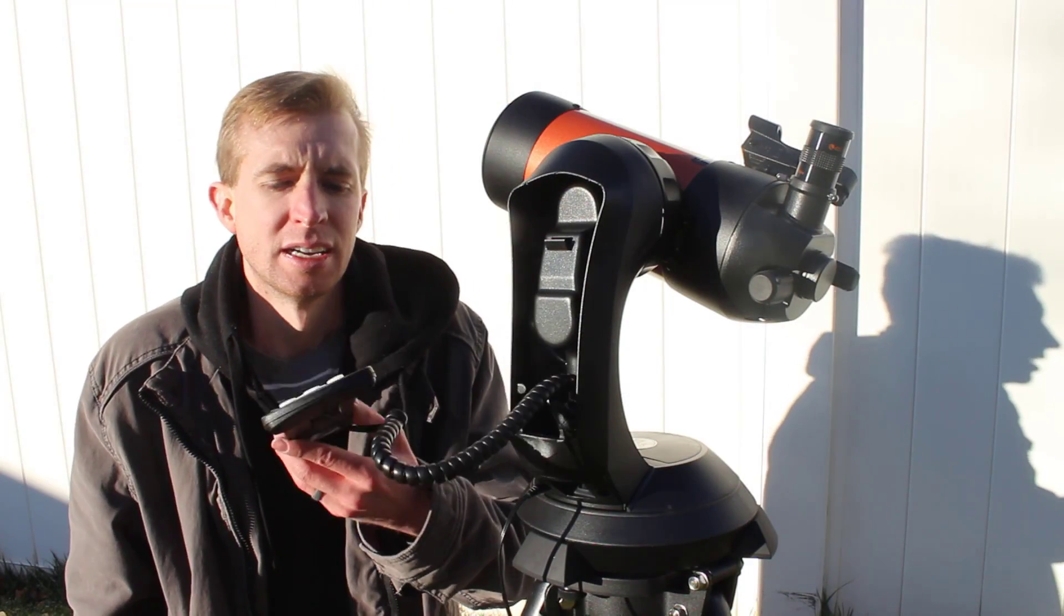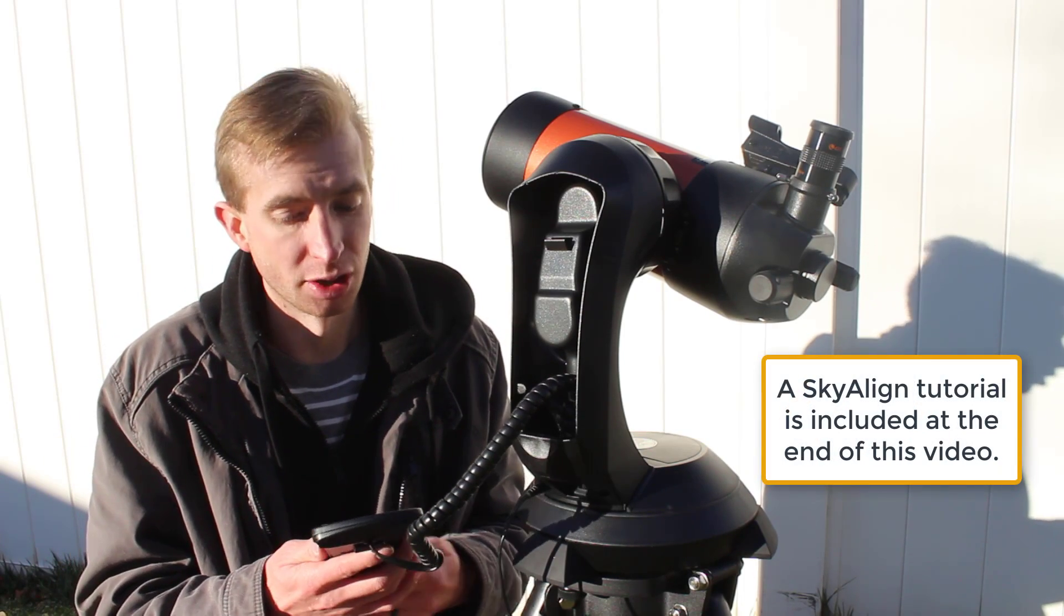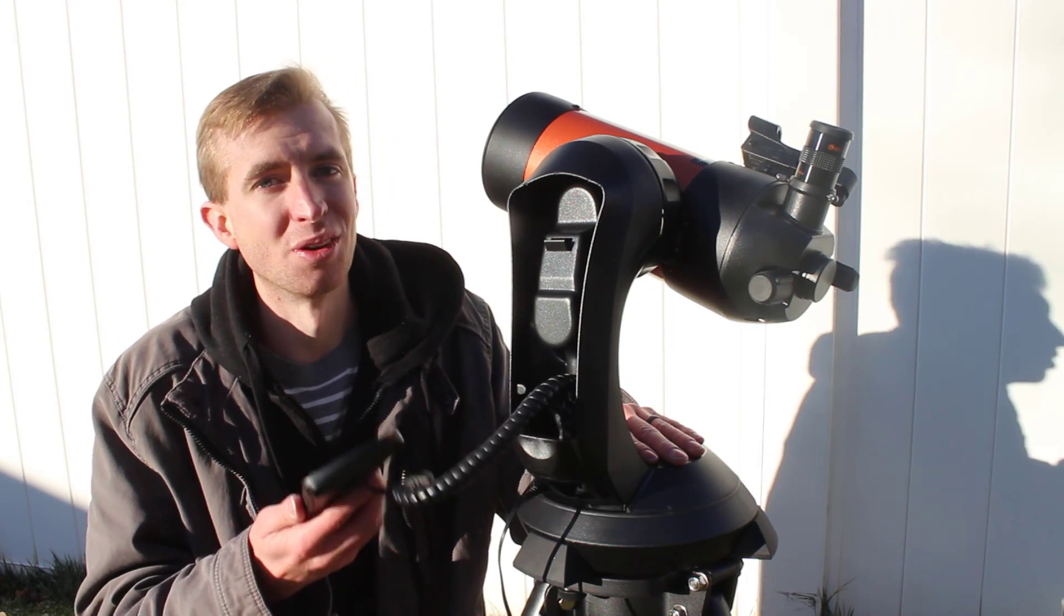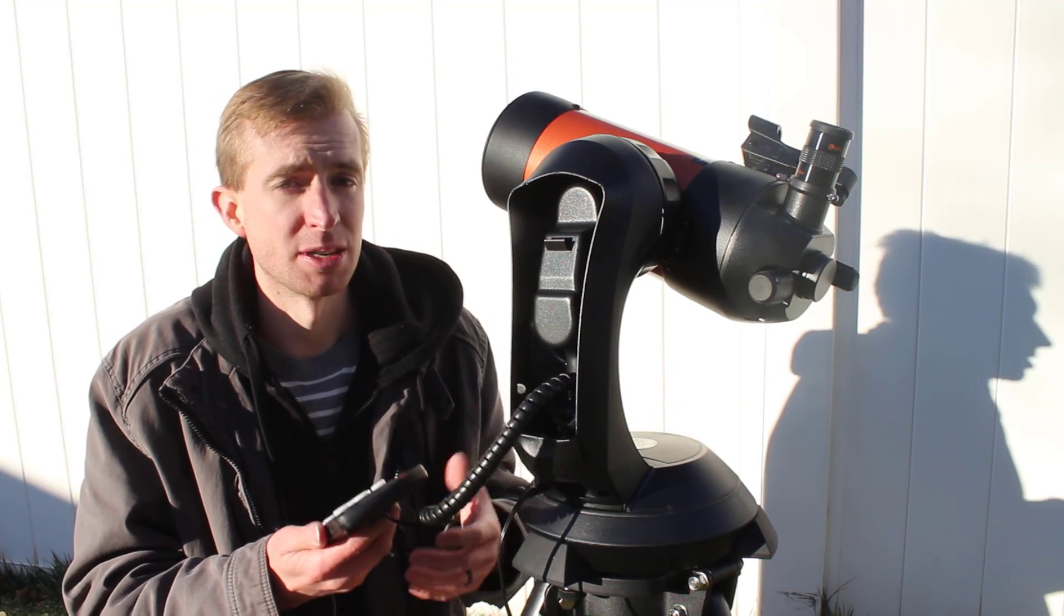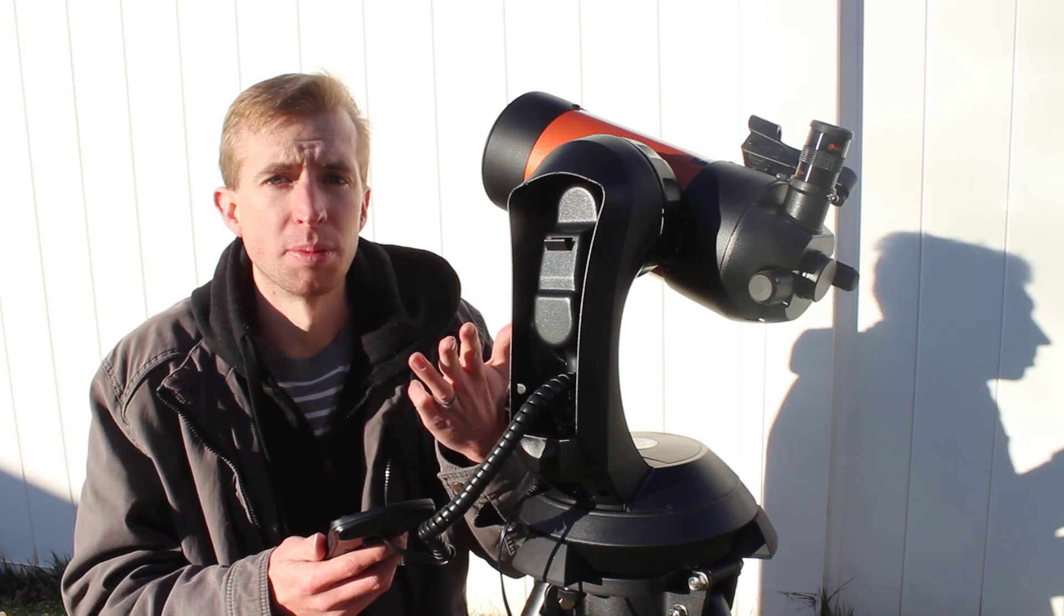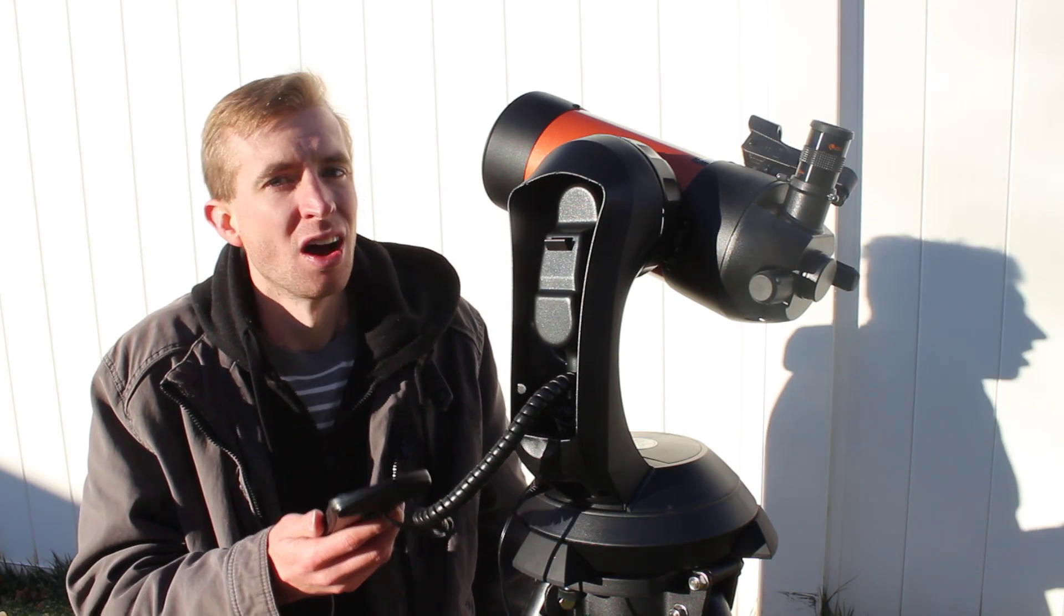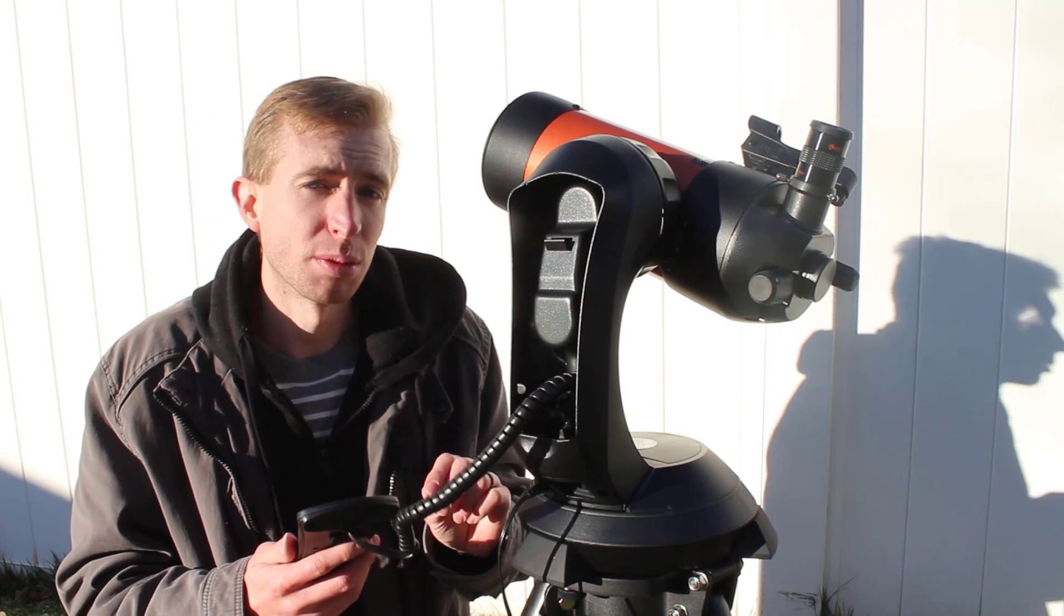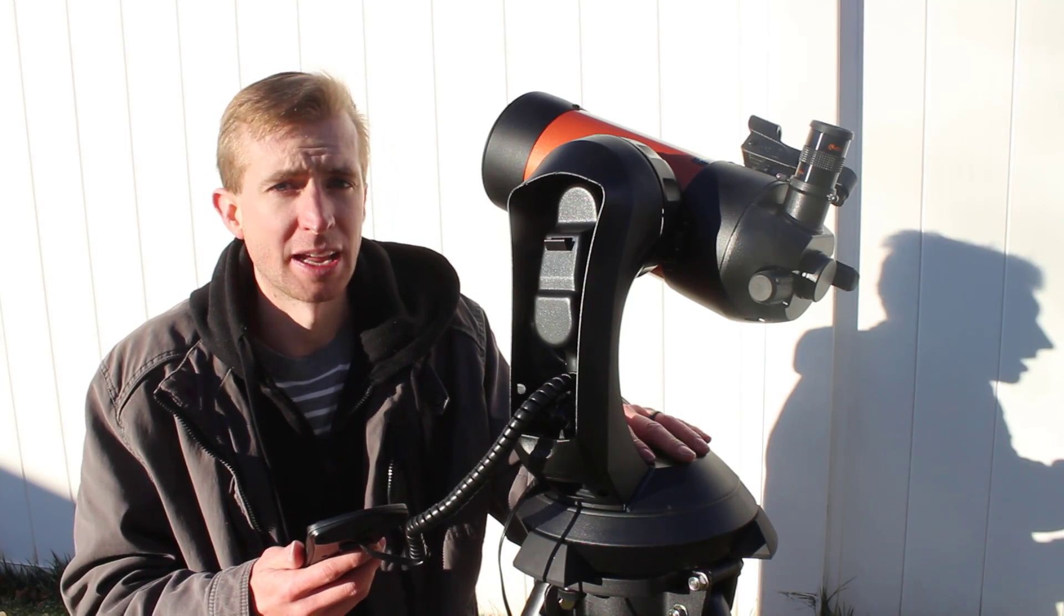This hand controller has 40,000 objects in its database. Now, you're never going to look at 40,000 objects. And frankly, this telescope is not capable of showing you all 40,000 objects that are in the database. But you get a huge variety of objects you can see. So stars, double stars, globular clusters, open clusters, galaxies, planets, the moon. All of those you can certainly see in the Nexstar 4SE. Galaxies might be a little bit tricky. But if you're at a dark sky site, you definitely could see the core of the Andromeda galaxy for sure.